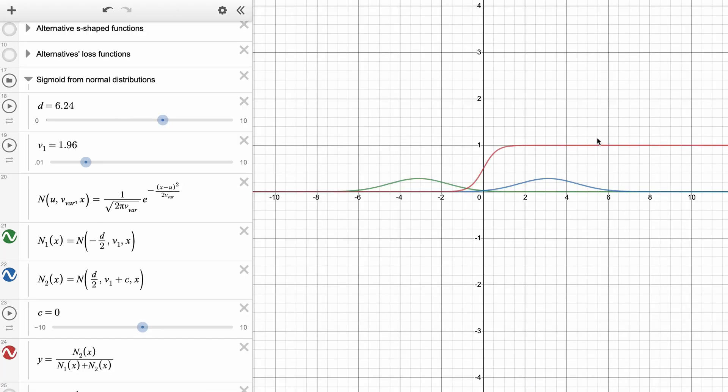Also note for the output shape to be this sigmoid shape, the variance of both of the normal distributions has to be the same. If, for example, one of the normal distributions has a greater variance than the other, then it will dominate in the tails of the distribution like this, as you can see the curve changing. And this is a sensible thing to do because we probably don't want to assume the outputs for one of our classes will have a greater variance than the outputs for another class.